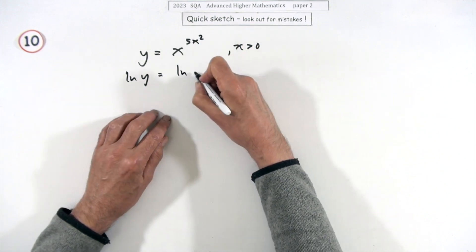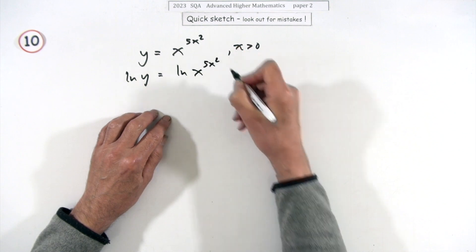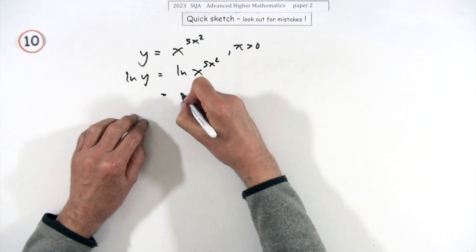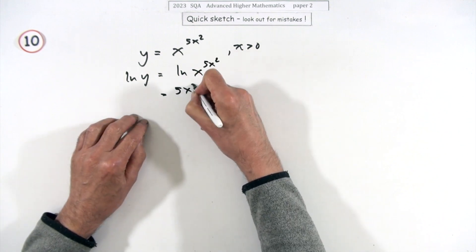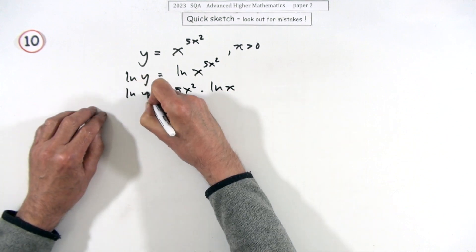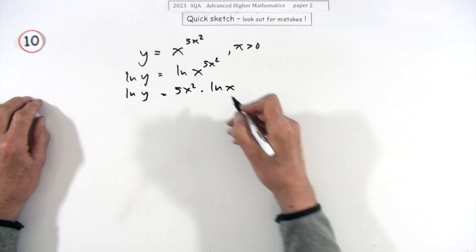The logarithm of y will be - let's put it down first of all, since there's five marks, I'm not sure it's worth five marks - will be the logarithm of x to the power of 5x squared. And the reason for that now is you can extract that power, so that'll be 5x squared times ln x.